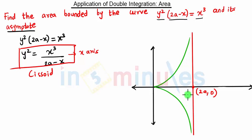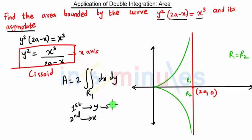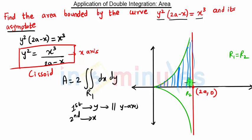Since the cissoid is symmetric about the x-axis, region R1 (above) and region R2 (below) are equal. We will perform integration only for region R1 and multiply by 2 to cover the entire region. The area equation will be 2 times the integration over region R1. We consider a strip parallel to the y-axis and move it from the origin to the asymptote.